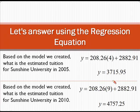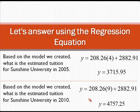When you solve for Y, these are your results. The estimated tuition in 2005, which is four years after 2001, will be approximately $3,715.95. The estimated tuition in 2010, which is nine years past 2001, should be approximately $4,757.25.